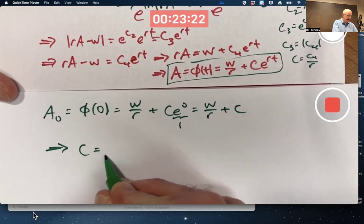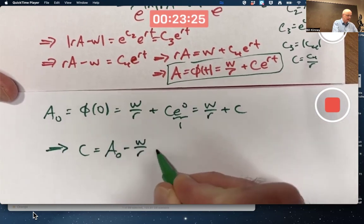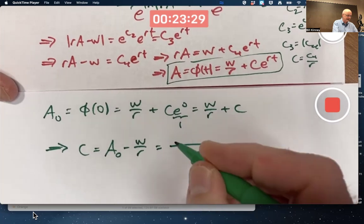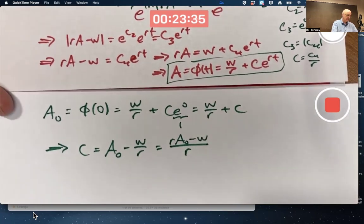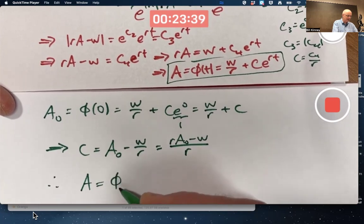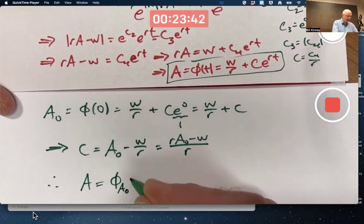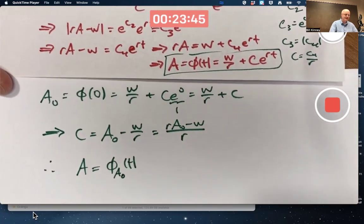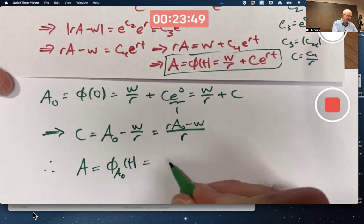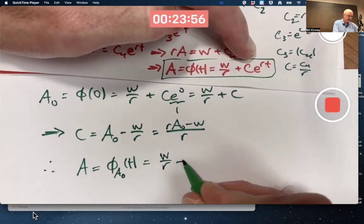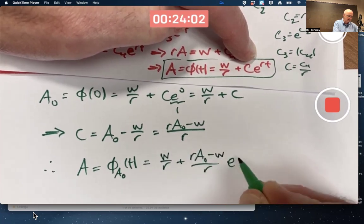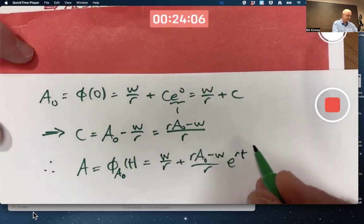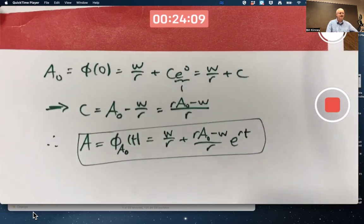A is a function of T which I'll call phi of T is W over R plus now I'll just call it C e to the RT. Here C2 is really R C1. You could say C3 is e to the C2. You could say C3 is also the absolute value C4 and then I guess C is C4 divided by R. I'm writing all that you don't have to just to remind you or make specific what I'm doing here. There's a general solution.